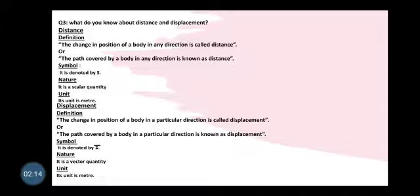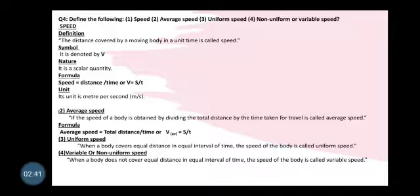So, if a body changes its position in any direction, that is distance. If it covers distance in a particular direction, that is displacement. Distance is a scalar quantity, displacement is a vector quantity, and both have the same unit: meter.